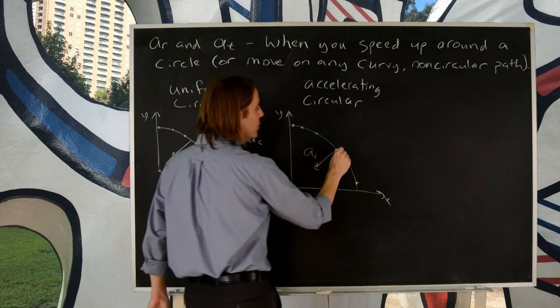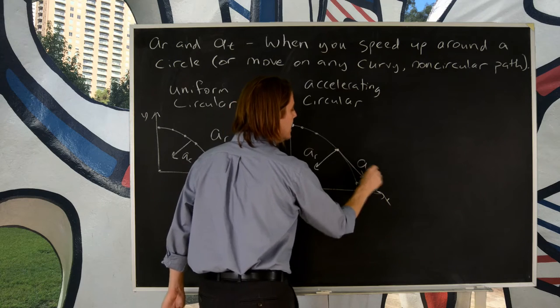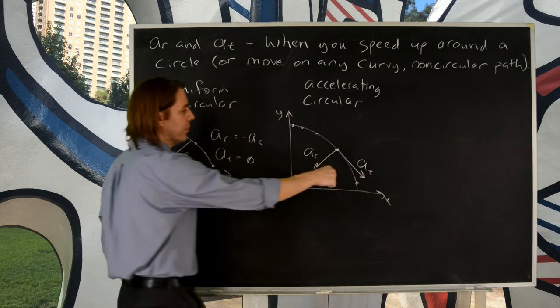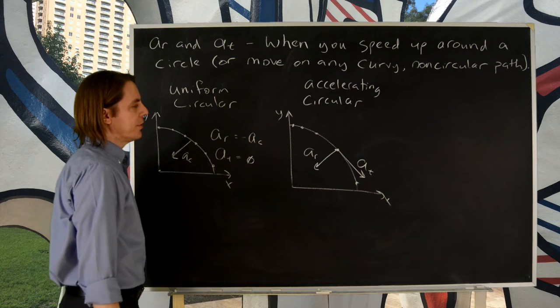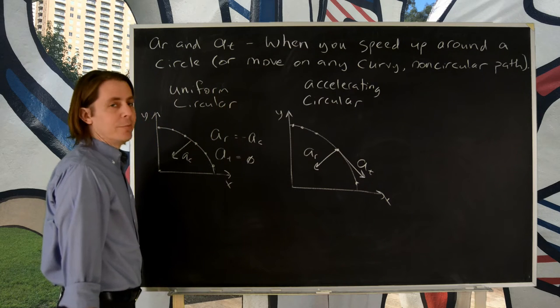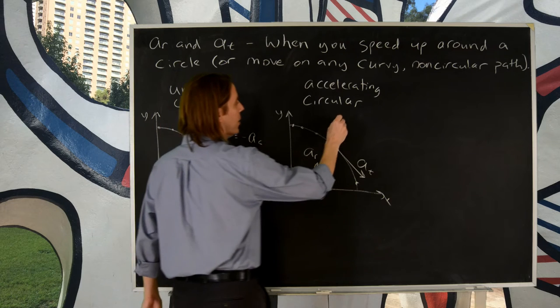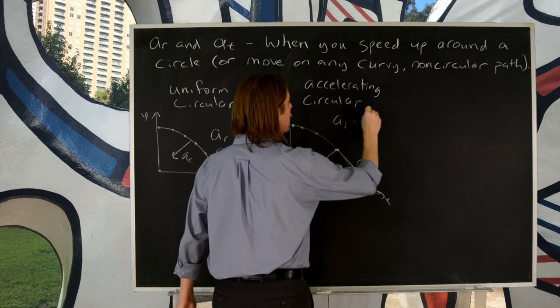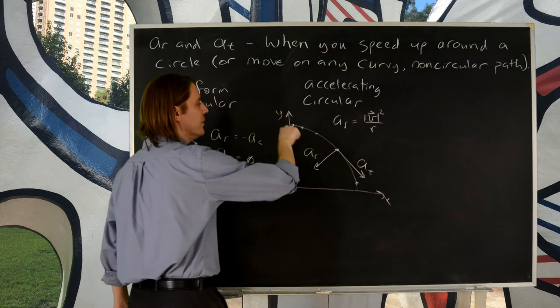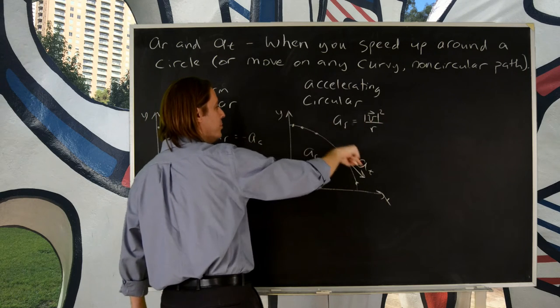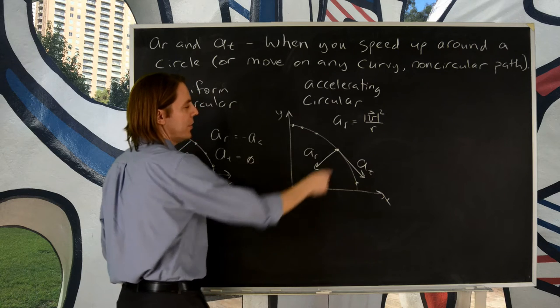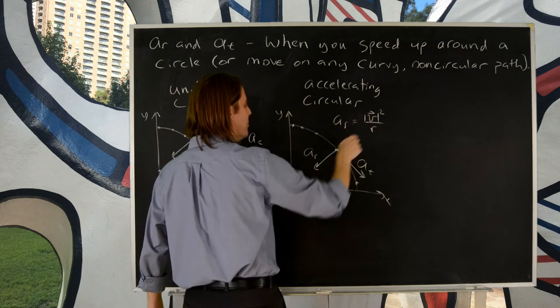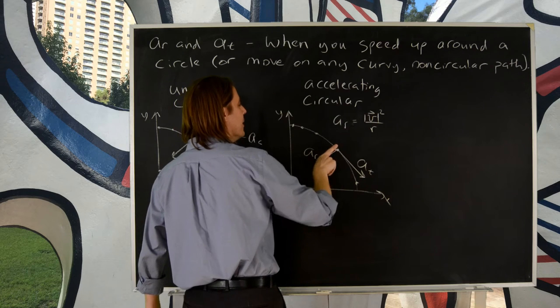So, now you also have AT. So, the tangential acceleration is along the curve. Radial acceleration is perpendicular to the curve. And if you were told to find them, in this case, AR, it's still V squared over R. Whatever the velocity is at some point, take the magnitude, the speed, square it, put it over R. That will always give you a positive number.